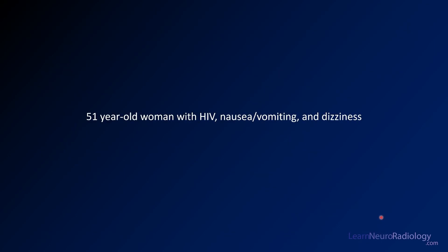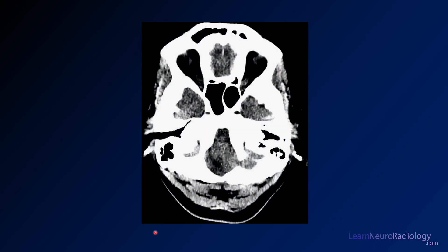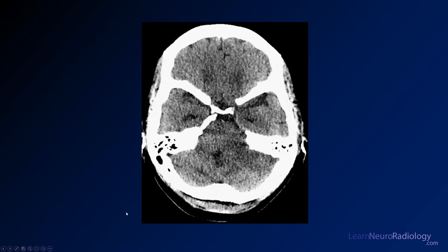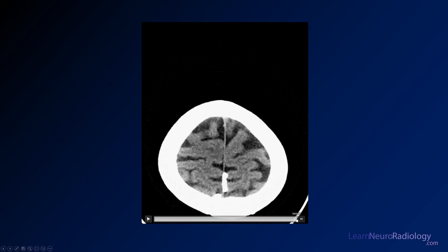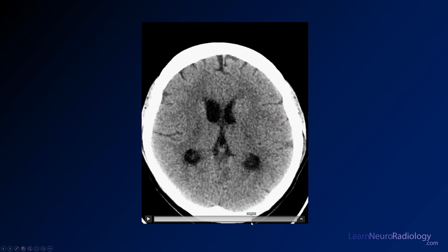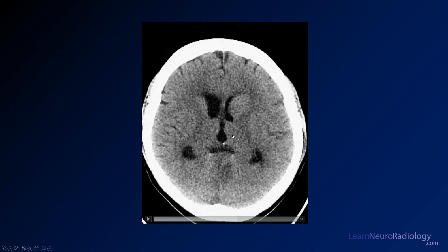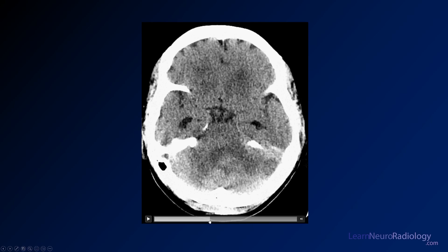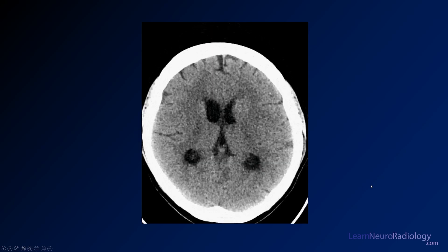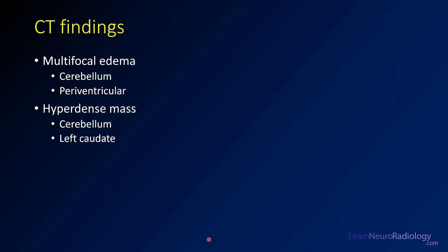This next case is a 51-year-old woman with HIV, nausea, vomiting, and dizziness. Looking at the CT: the supratentorial brain looks okay, though maybe there's some asymmetry of the caudates. The real finding is in the posterior fossa, which looks really swollen and full — maybe some hyperdensity there. Something seems to be going on in the right middle cerebellar peduncle. The cerebellum looks pretty swollen. On representative slices, there may be hyperdensity with multiple masses in the cerebellum, and the caudate looks a little funny. We have multifocal edema, some periventricular edema, and some cerebellar edema, with possibly hyperdense masses.